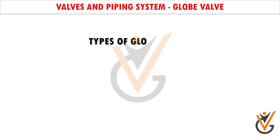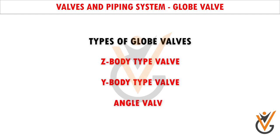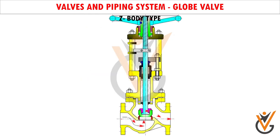Types of Globe Valves: The three main designs of globe valve are Z-body type valve, Y-body type valve, and Angle valve. Z-body type: This is the simplest and most commonly used design of globe valves, favorable for applications involving water flow. The name Z-shaped is derived from the Z-shaped diaphragm or partition in the bulbous-shaped body.